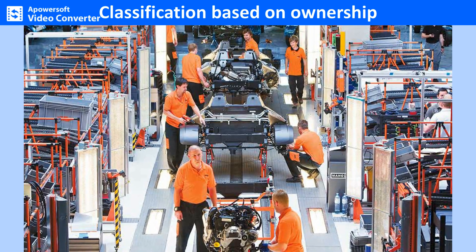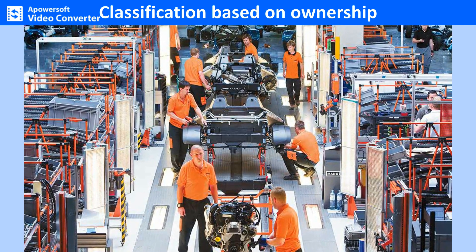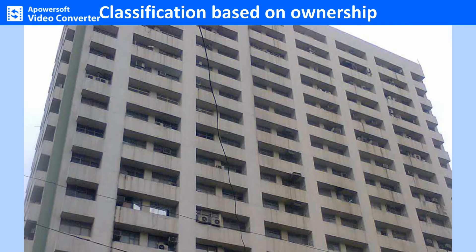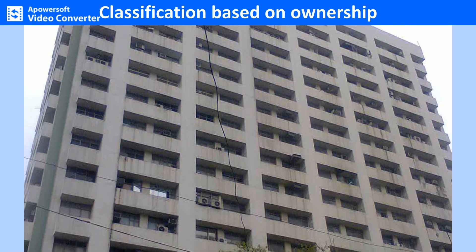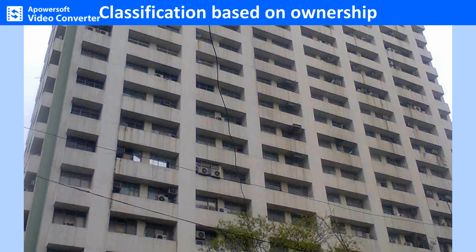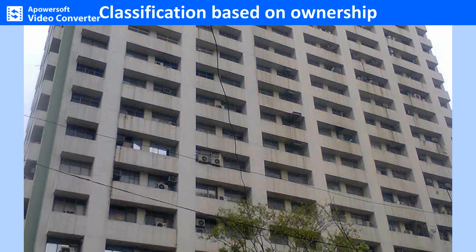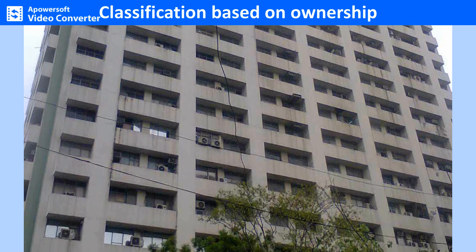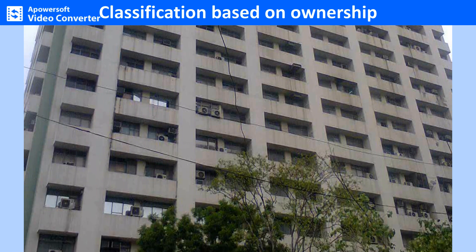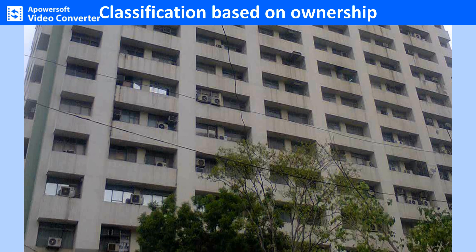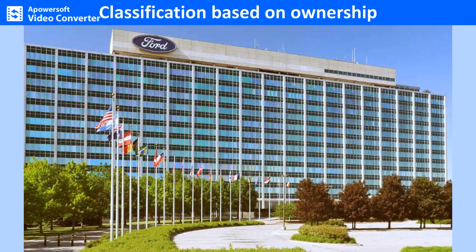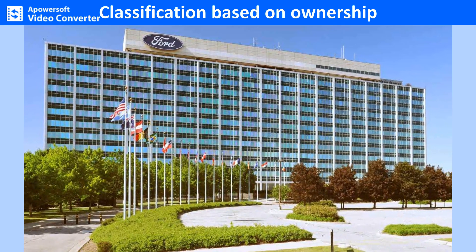Classification based on ownership. This classification is based on the way the means of production are owned and controlled. Private sector enterprise: if the means of production belong to a private individual or a group of private individuals who are partners, it can be described as a private sector enterprise. Profits derived from the sale of output belong to the individual who owns the manufacturing unit and who makes all the capital investments in it. The Tata Iron and Steel Company (TISCO) and the Ford Motor Company are two examples in this category.